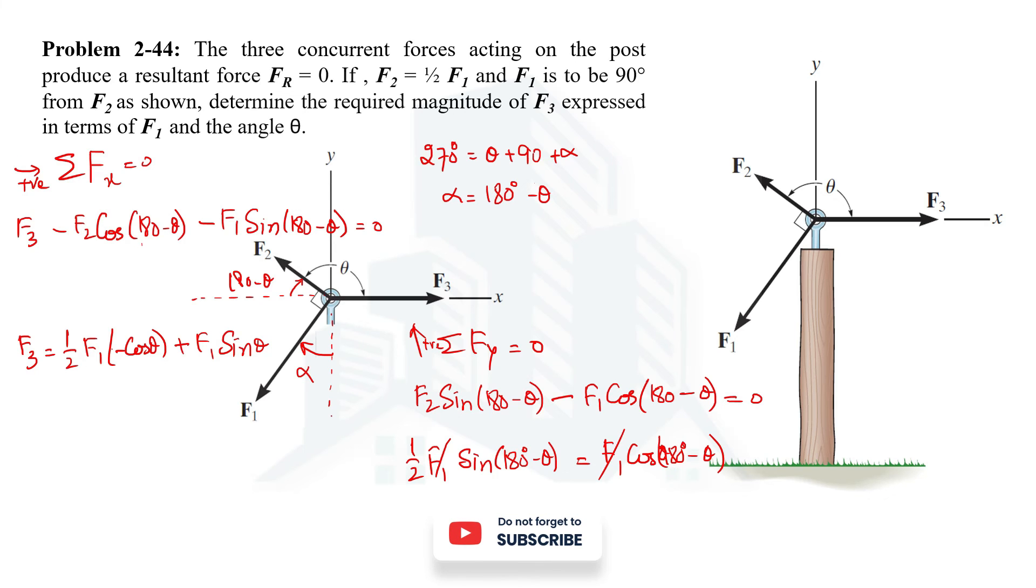So tan inverse of 2 will give you 63.43 degrees. So if you simplify here, you will get theta as 116.56 degrees.